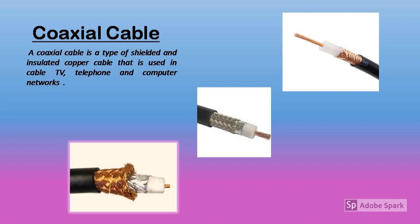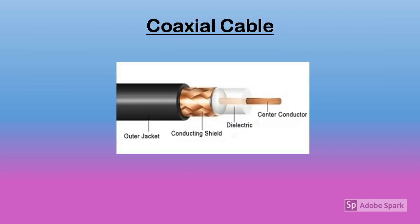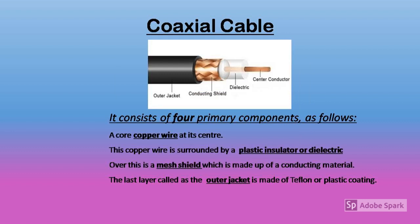Coaxial cable also falls under wired transmission media. They are again copper wires but with better shielding than twisted pair cable, and they can transmit signals over longer distances at higher speeds. They are generally used for cable TV connections, local area networks, and telephone lines. A coaxial cable consists of four primary components: a copper wire at the center, a dielectric or plastic insulator, a conducting mesh shield, and an outer jacket.